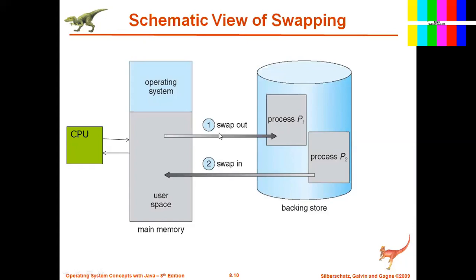Some processes sitting in main memory without executing are sent out — that process is called swap out. Once you send process P1 from main memory to secondary storage, some space becomes free in main memory. Then in place of that freed memory you can bring in process P2 — this is called swap in. If you're bringing data from secondary storage to primary storage, that's swap in. If you're sending data from primary storage to secondary storage, that's swap out. This entire topic is called swapping.